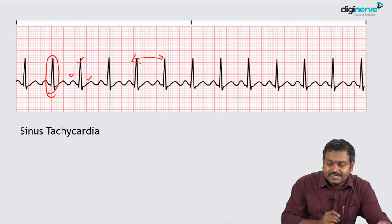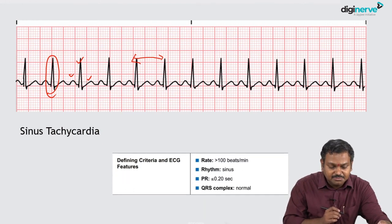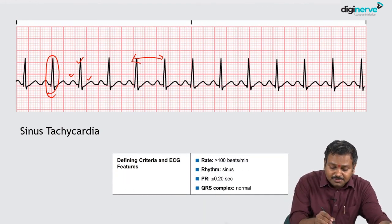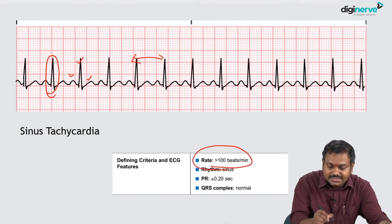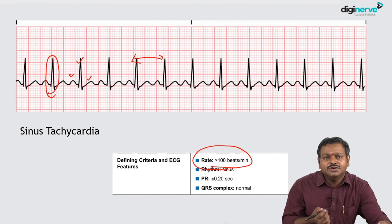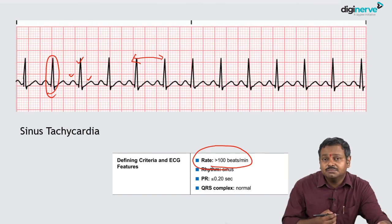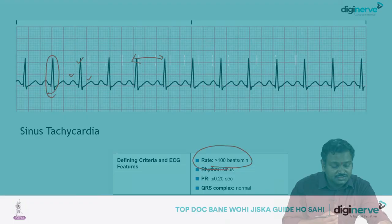Sinus tachycardia has all the features of sinus rhythm — a normal PQRST — with the only abnormality being the increased heart rate. Sinus tachycardia can be a normal phenomenon, occurring physiologically with fever or anxiety, or it could be due to a pathological condition.